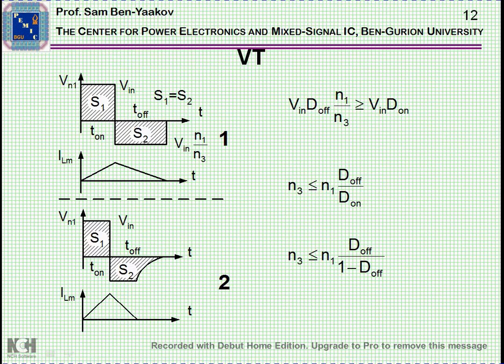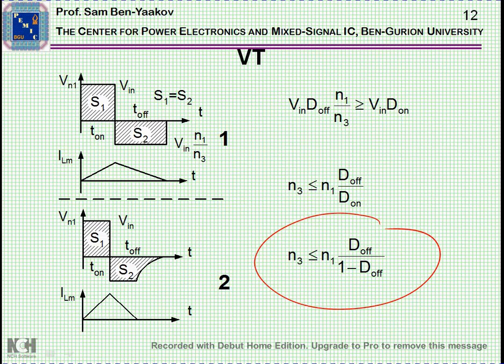Summing all this up — I won't go through the mathematics, but whoever wants to look at it, please pause the video — you get the relationship that gives the required number of turns N3, which should be smaller than this value. The smaller it is, the more reserve area you have.